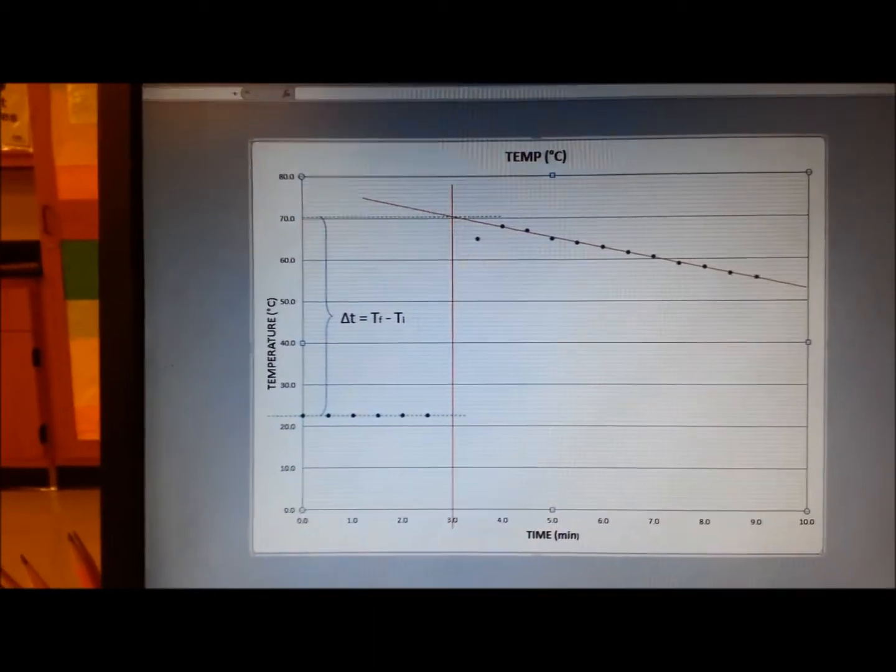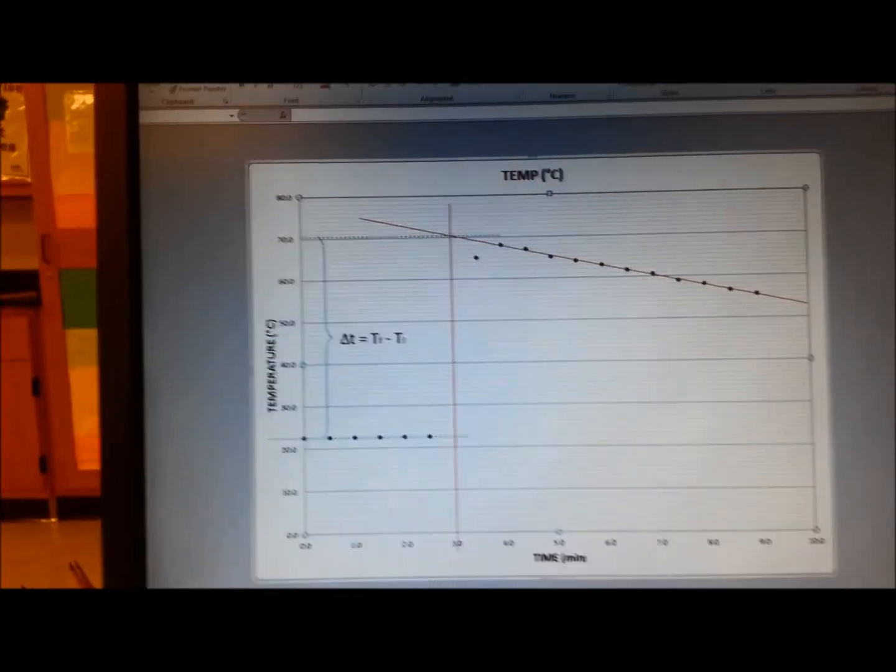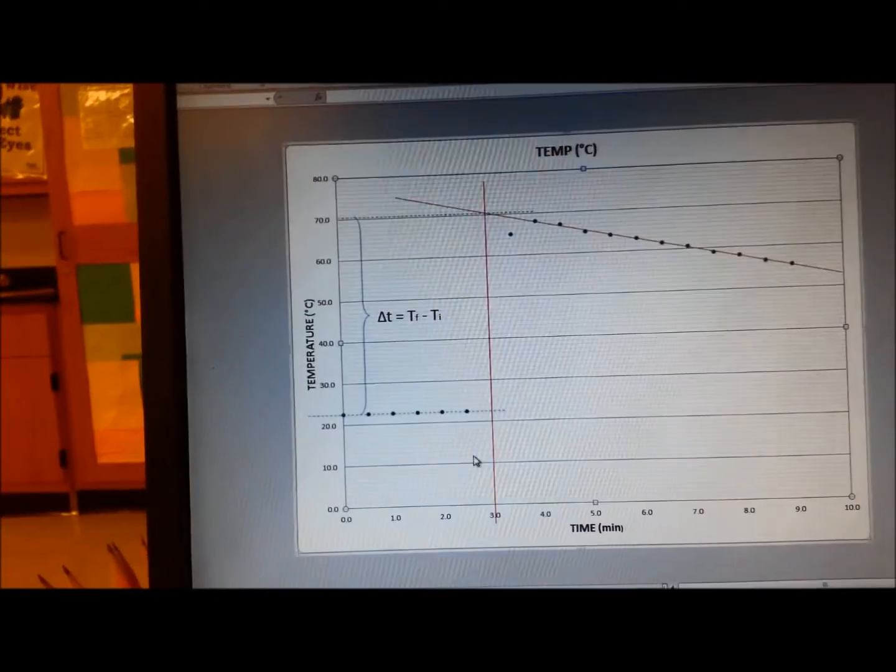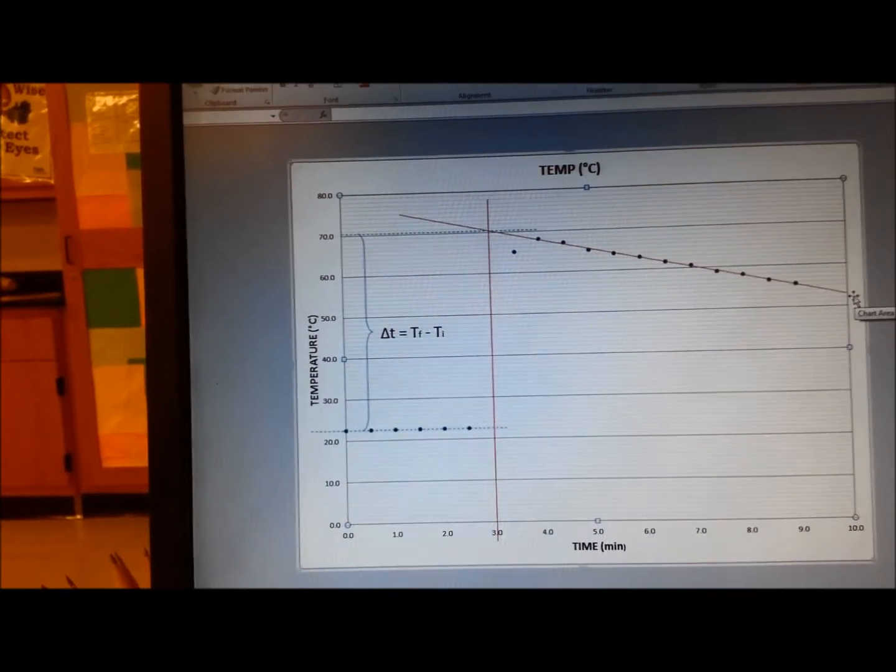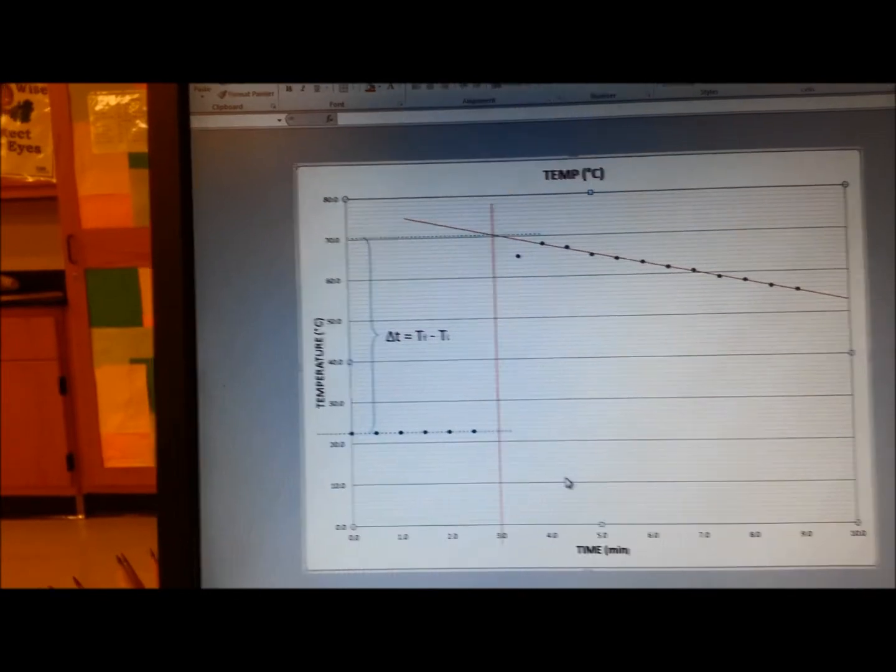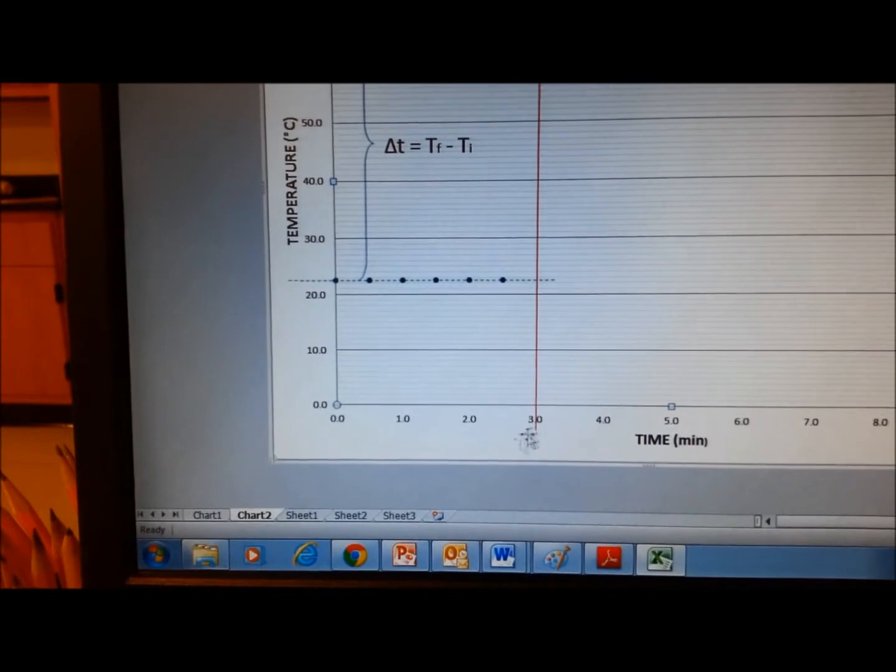After we develop the chart that is going to have only the dots, we put two red lines. One is going to be the best fit for this decrease in temperature after the maximum temperature was achieved, and the vertical at exactly three minutes.